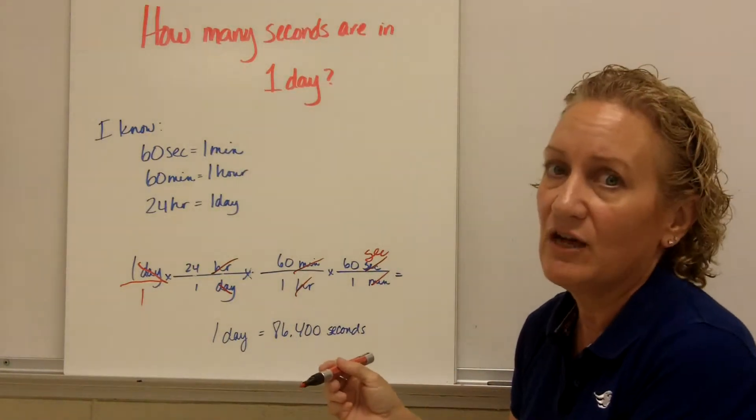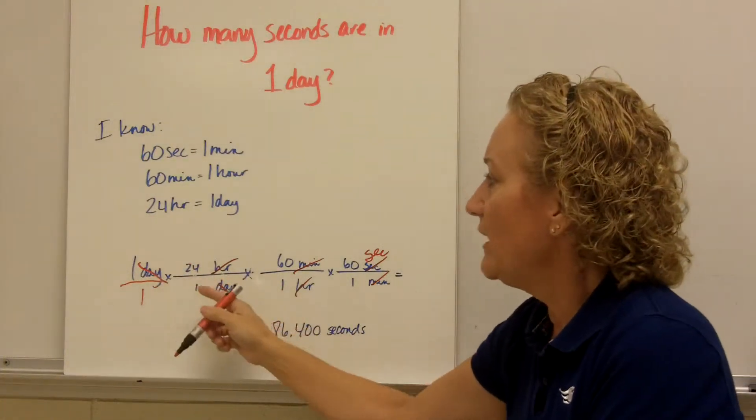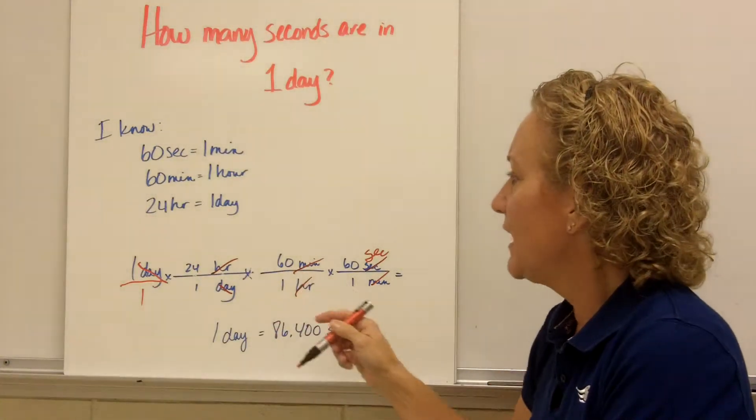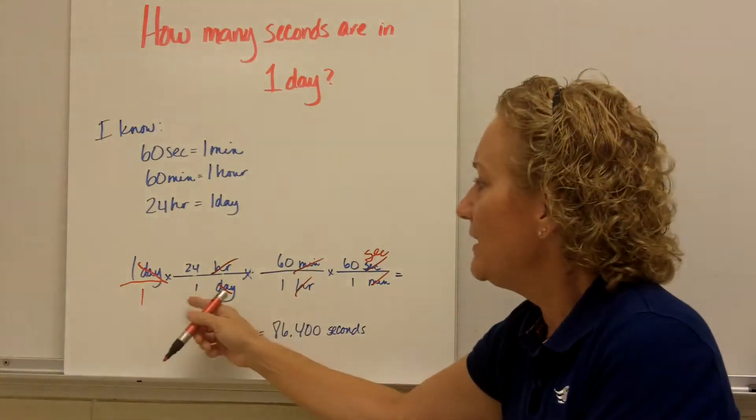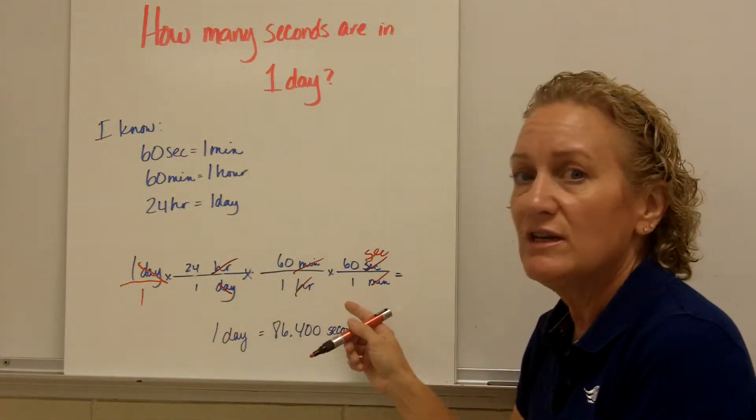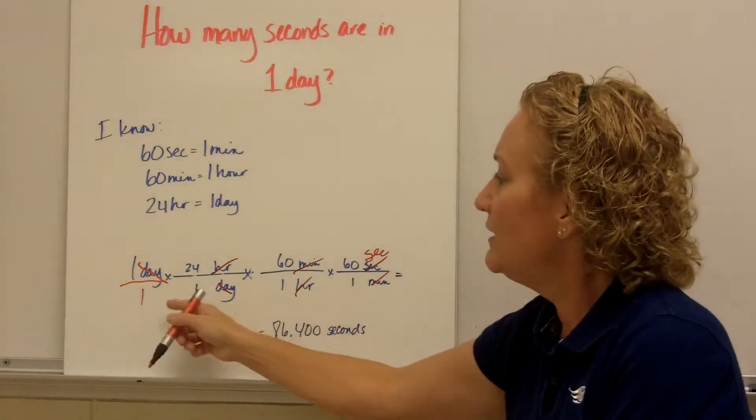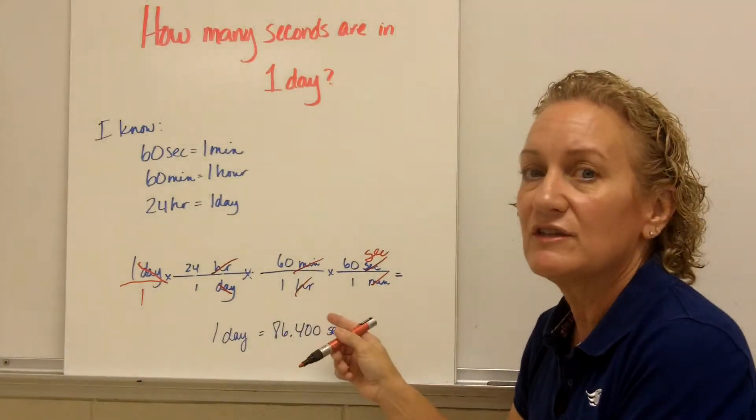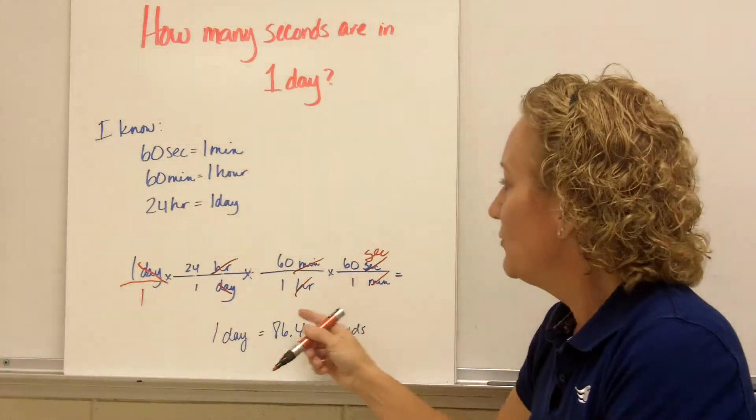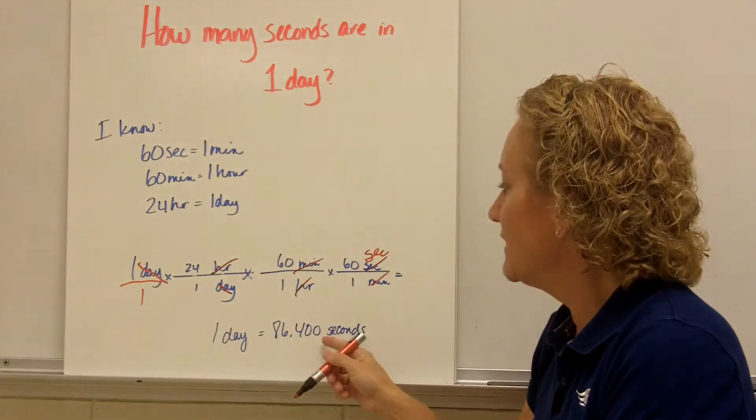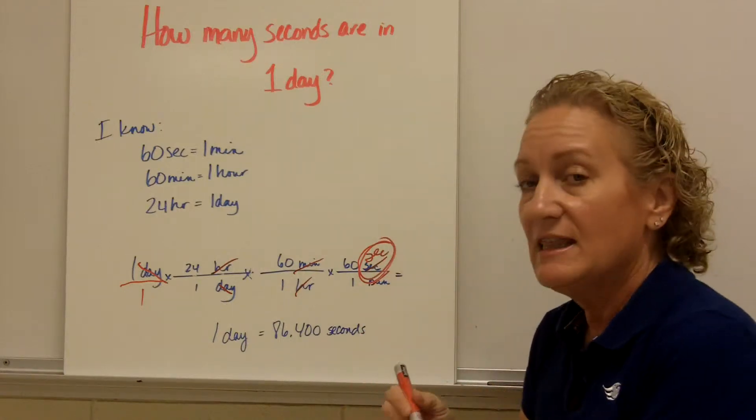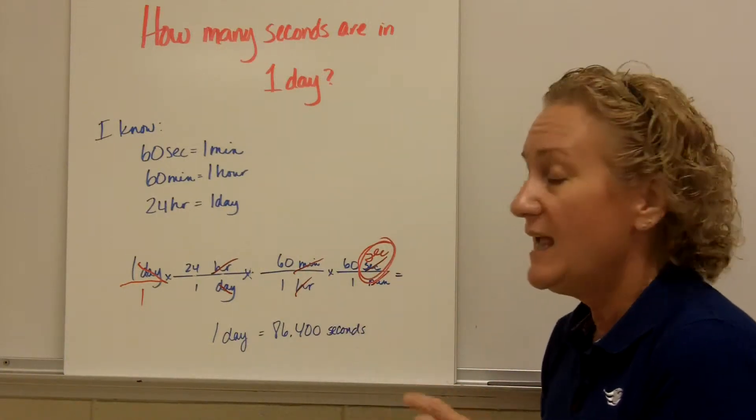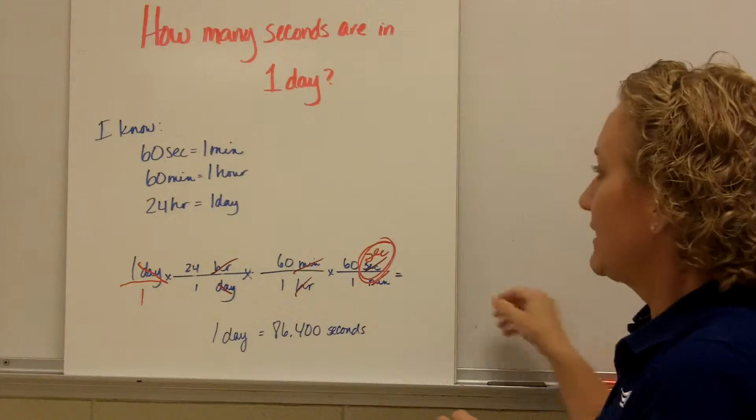I'm going to go ahead and let my fingers dance on the calculator key. I'm going to take one times 24 times 60 times 60 and hit the equal key. And because these are all one in the denominator, I don't need to divide it by anything. If any of these was something other than one, I'd need to put a division in there. But it's not. So when you multiply all that together, you get 86,400. What's my units? The only thing I have left. Seconds. And that's what I want. So one day is 86,400 seconds.